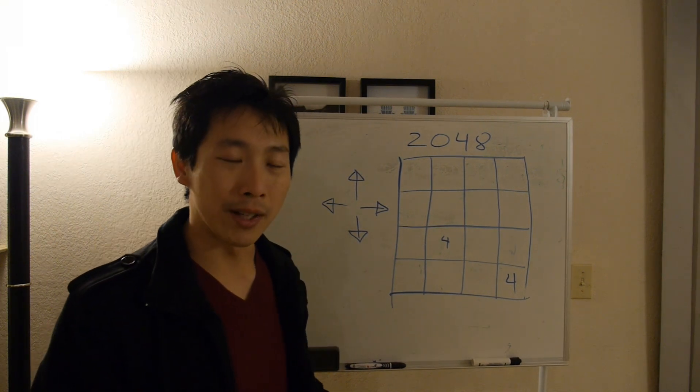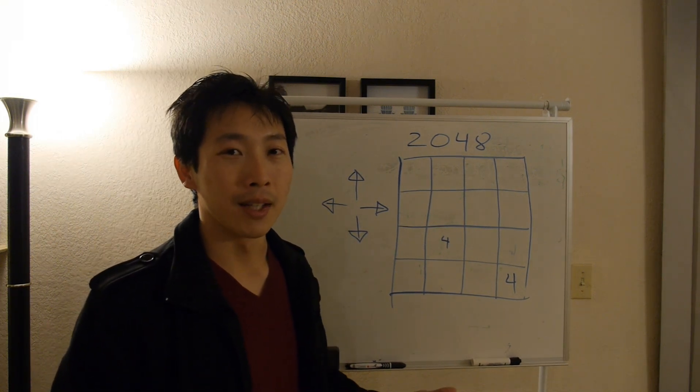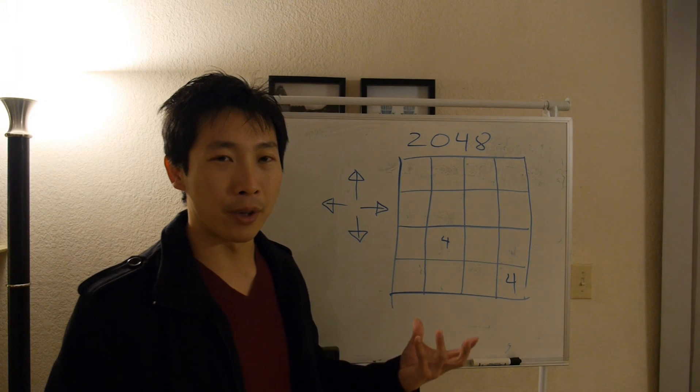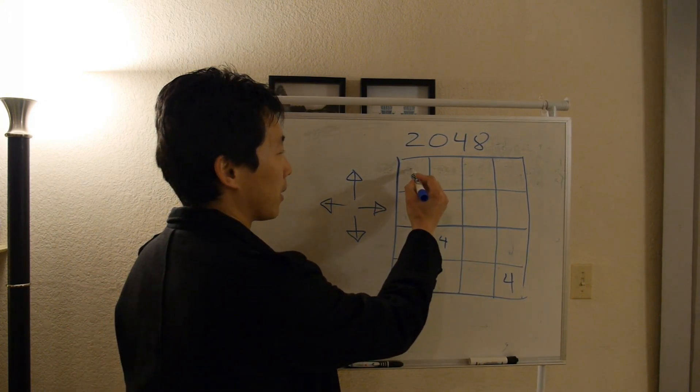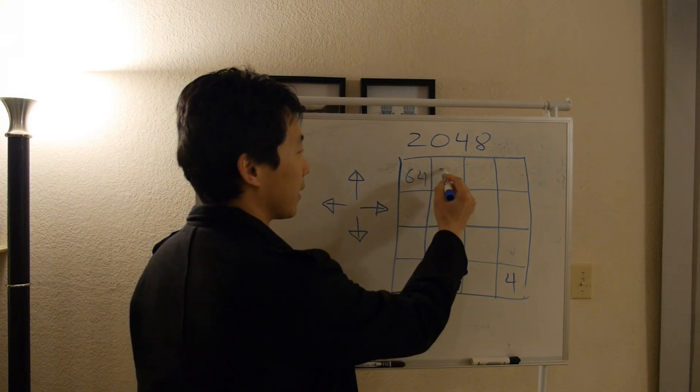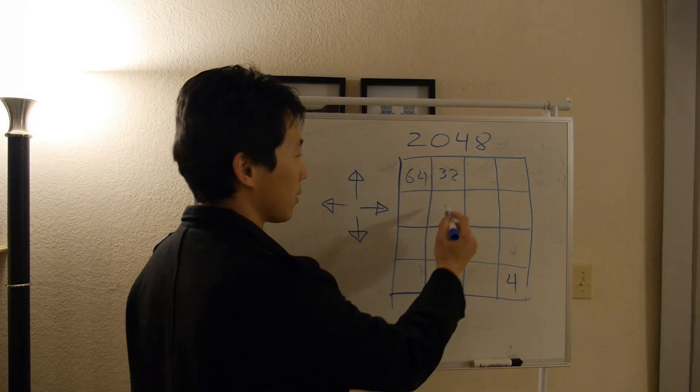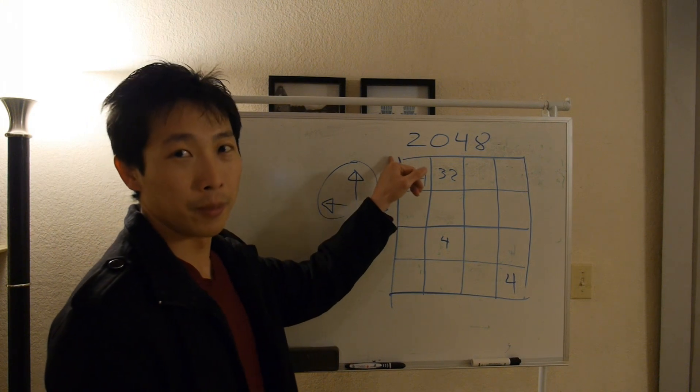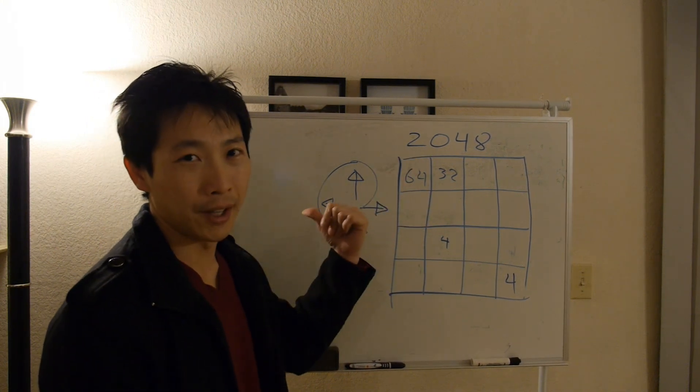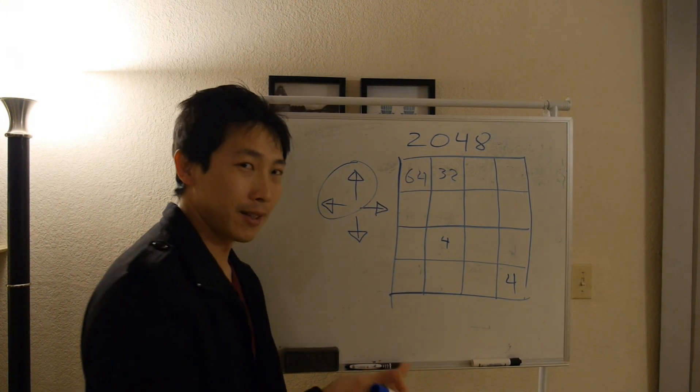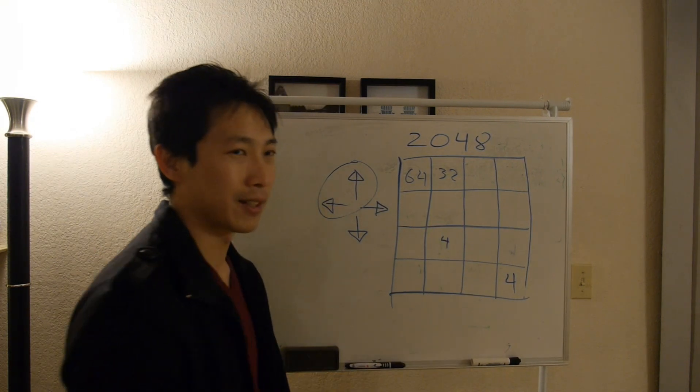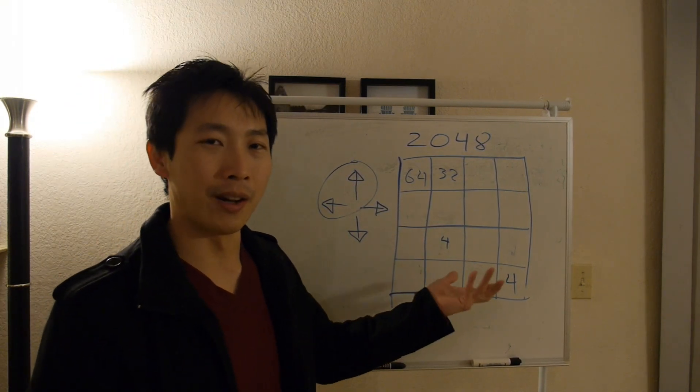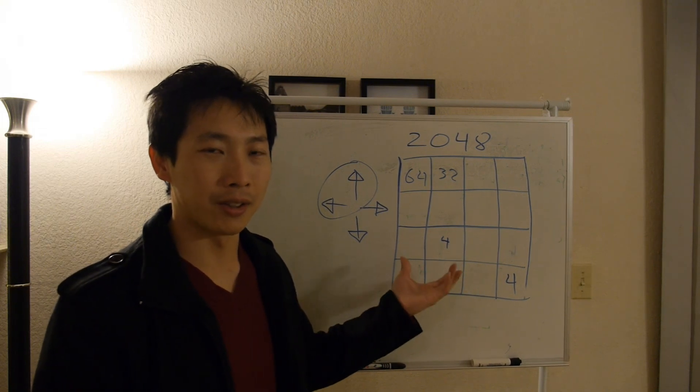So one of the strategies you can have in playing this game is to make the highest number go towards one of the corners. Either you combine big numbers and then you can put like 64 here and then 32 and so forth. If you pick this corner, you just want to push up and left most of the time. And you can essentially do this as fast as you can until a bunch of numbers collect. And then you don't have to spend so much time collecting all the numbers.